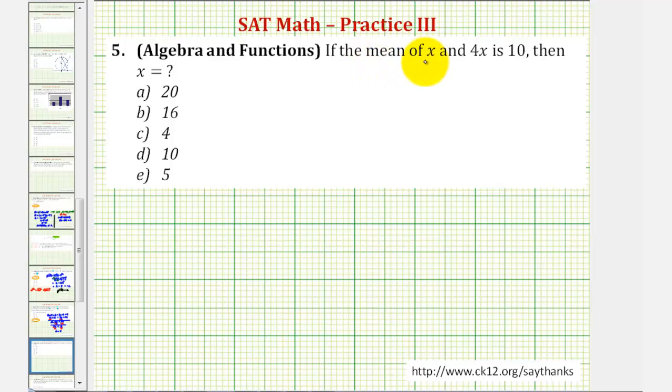So because we know the mean of x and 4x is 10, then x plus 4x divided by 2 must equal 10. Again, this is the mean of the two expressions and we're told it's equal to 10.